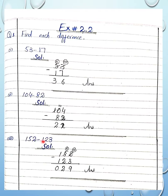Now 52 minus 23: in the ones place, 2 minus 3 — since 2 is less than 3, we borrow 1. So 12 minus 3 is 9. In the tens place, we now have 4 after borrowing, and 4 minus 2 is 2. Then 1 minus 1 is 0. So the answer is 29. This completes Exercise 2.2 Question 1.